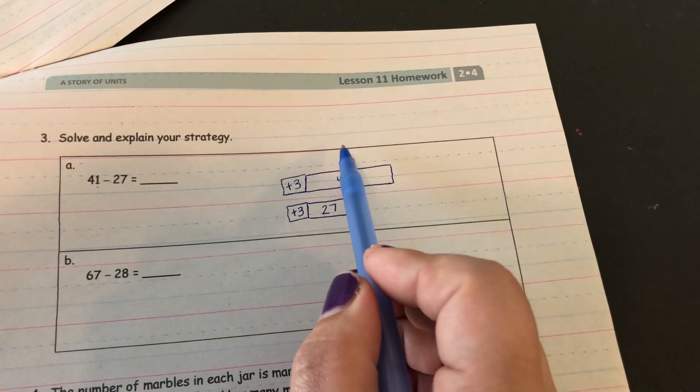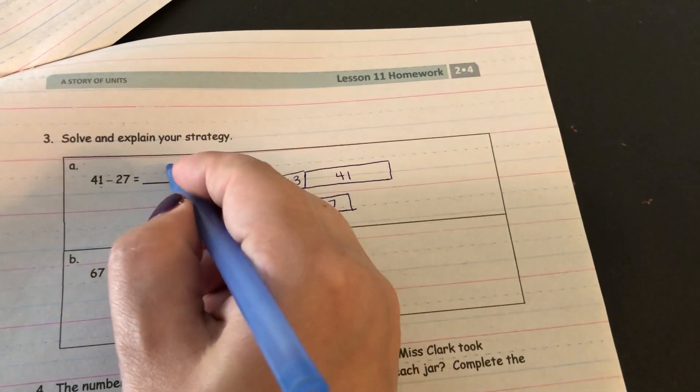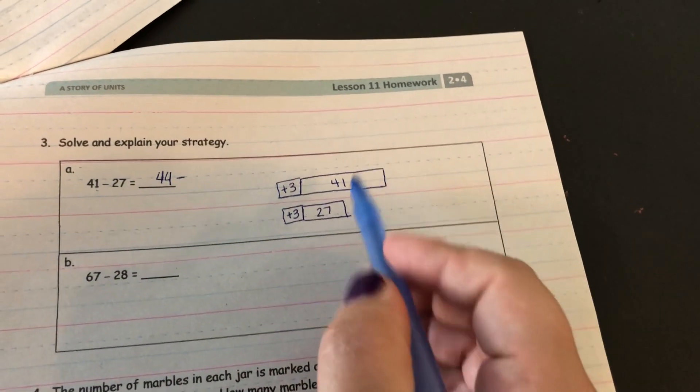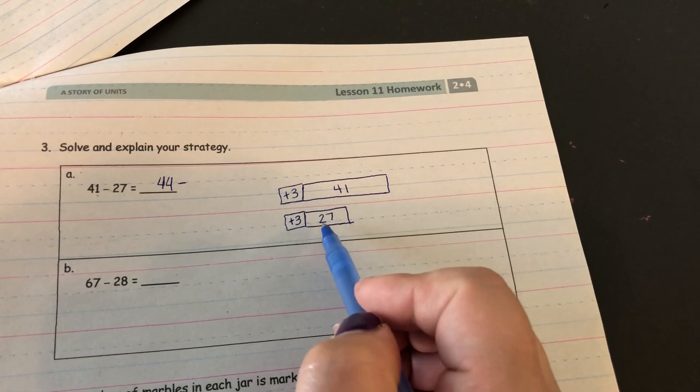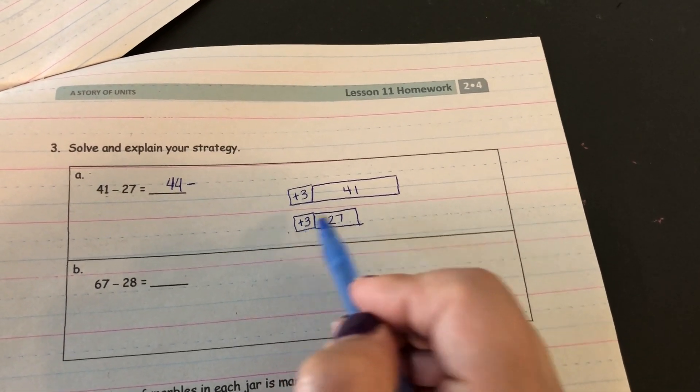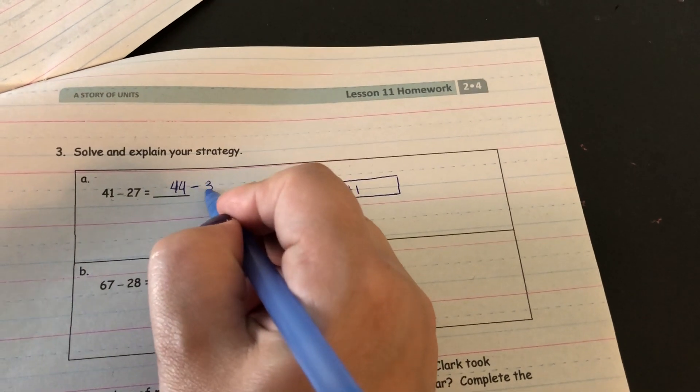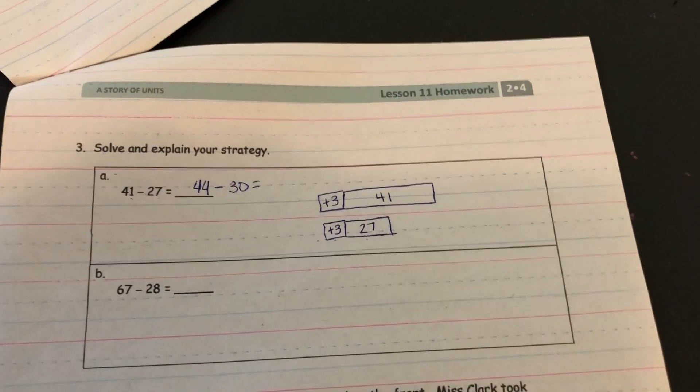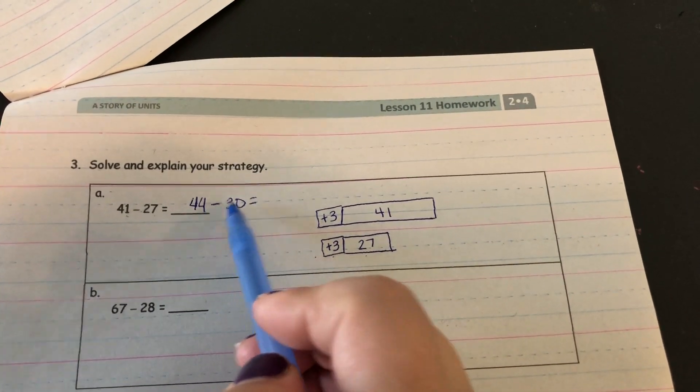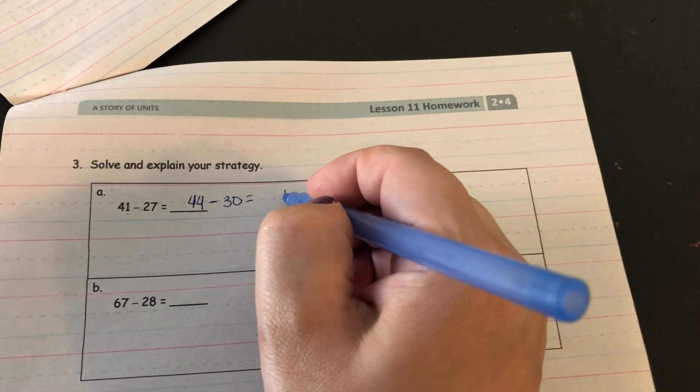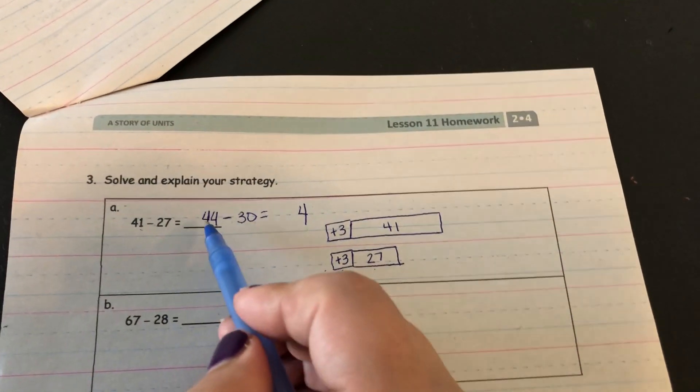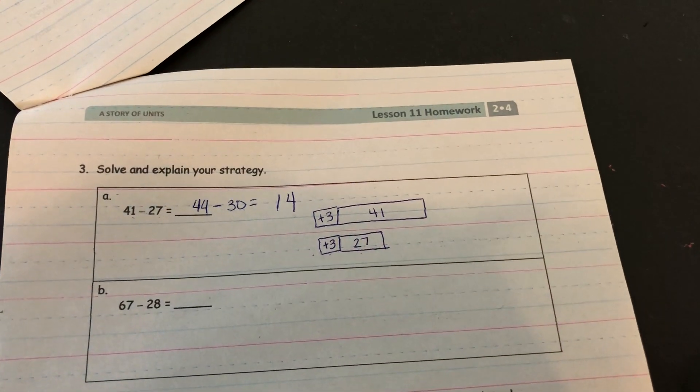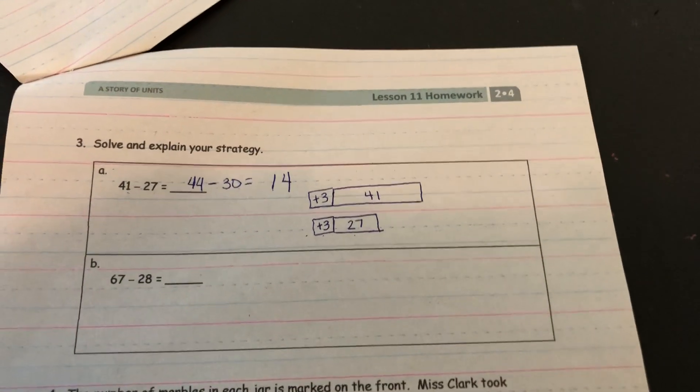So now I have 44 and I want to subtract 27 plus 3. So thinking 27, 28, 29, 30. And now I can subtract using like units. If I have four ones and I take away none of them, I still have four ones. And if I have four tens and I take away three of them, I have one ten. So that strategy works out well.